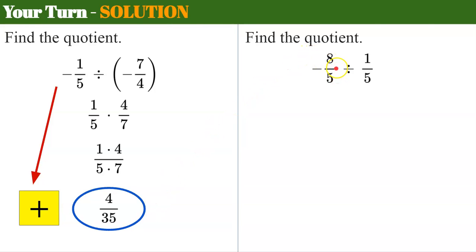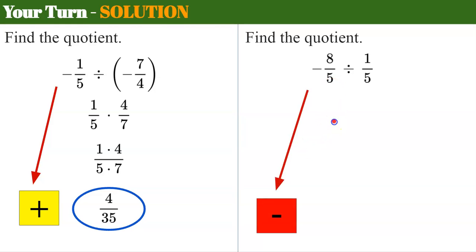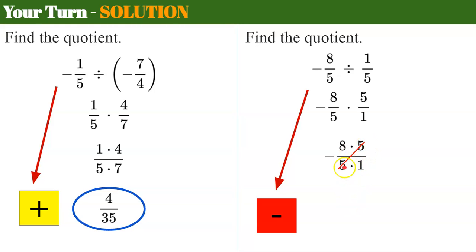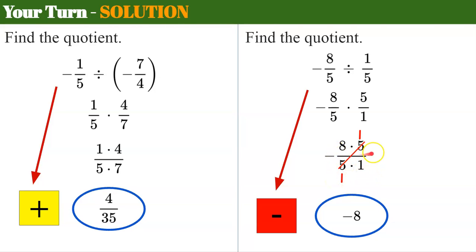Our second problem. I have a negative divided by a positive — two different signs — means negative quotient. I'm going to keep the first fraction, change to multiply, and the reciprocal is five over one. Multiply our numerators and denominators: eight times five is 40, and I need to simplify. Both the numerator and denominator have a common factor of five, so five divided by five is one, leaving me negative eight. Eight times one over one times one — my quotient is negative eight.